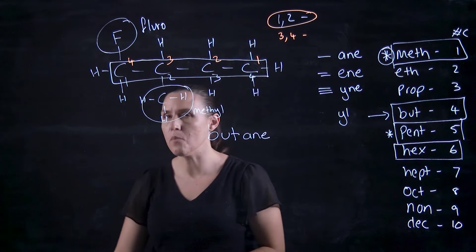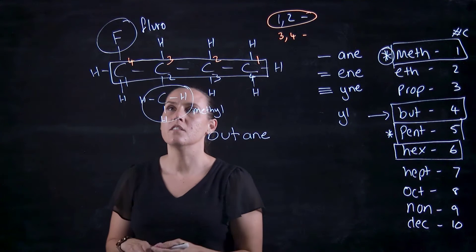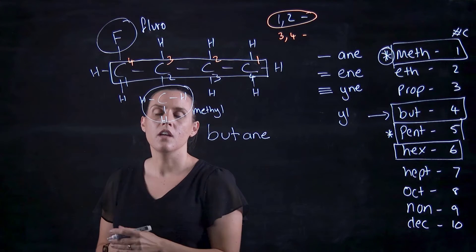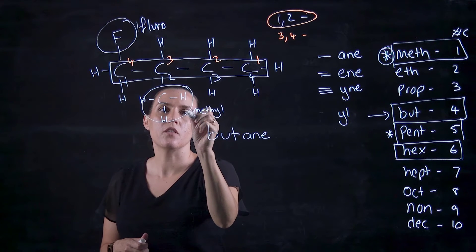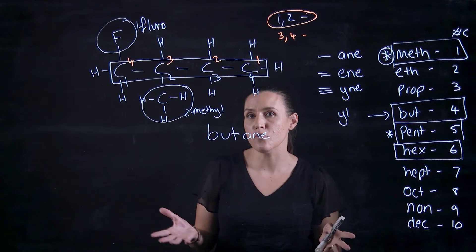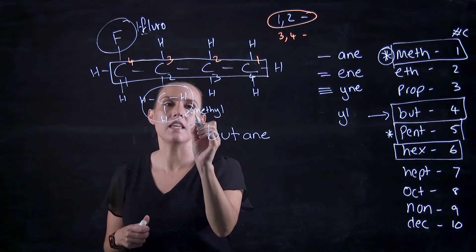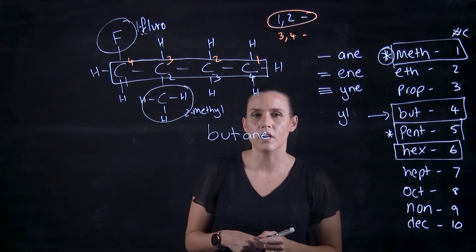So that would be the numbering from here with 4 being here. So that's a 1-fluoro and a 2-methyl. Now when I'm putting this together, I want to do it alphabetically.